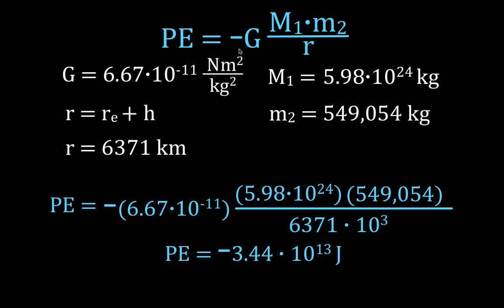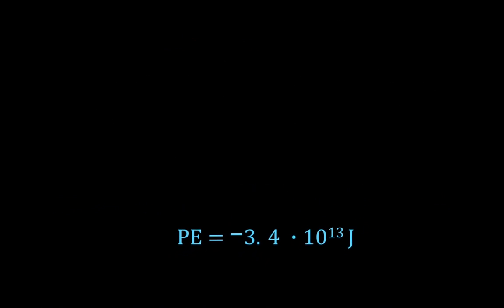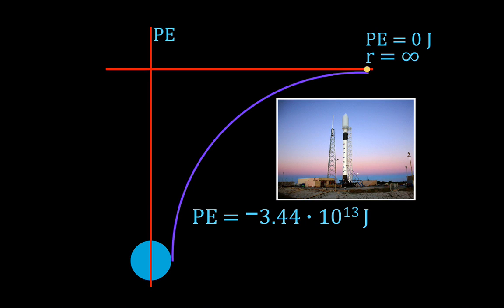We have a negative sign in the equation and our answer has a negative sign — the answer needs to have a negative sign. I want to talk about what that negative sign means, as I did in the previous video which you can link to in the upper right-hand corner. Using this graph: this is the Earth, the y-axis is potential energy, the x-axis is distance away from the center of the Earth, and this is a graph of potential energy with respect to distance. We calculated the potential energy as minus 3.44 times 10 to the 13 joules.